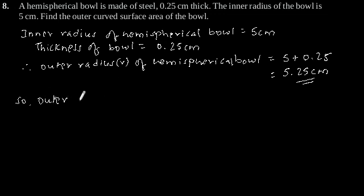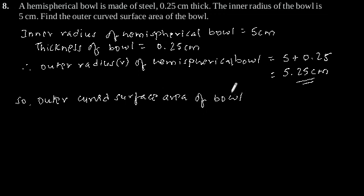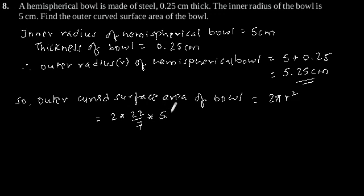So, outer curved surface area of hemispherical bowl is equal to 2πR². Putting the value of R, you will get 2 into 22/7 into 5.25 to the power 2. This is equal to 173.25 cm square.